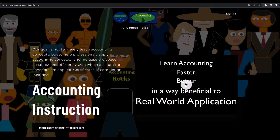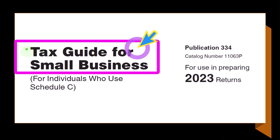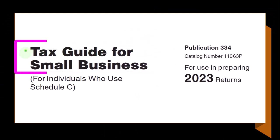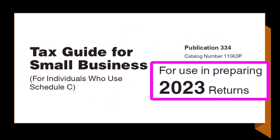If you would like a commercial-free experience, consider subscribing to our website at accountinginstruction.com or accountinginstruction.thinkific.com. Most of this information can be found in Publication 334, Tax Guide for Small Business for individuals who use Schedule C, tax year 2023, which you can find on the IRS website at irs.gov.